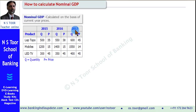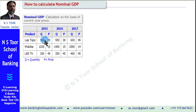When we calculate GDP for 2017 on the basis of prices prevailing in 2017, we call it nominal GDP. Similarly, when we calculate GDP for 2015 and consider the prices prevailing during 2015, then it is also nominal GDP.